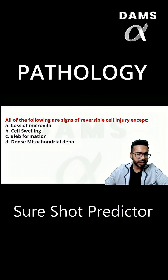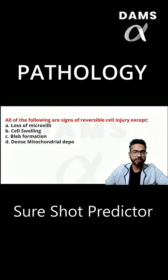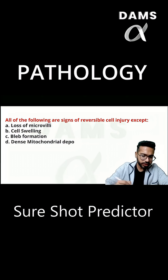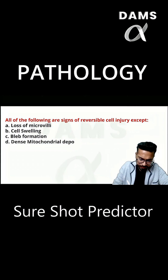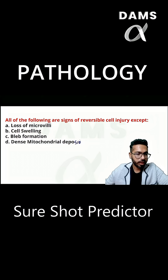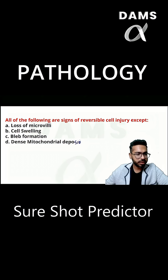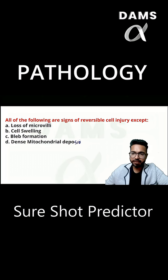Quick review — we will try to cover 25 questions in one hour. All of the following are signs of reversible cell injury, except — pretty easy question, no wasting time on this. I hope everybody who is online will comment and will engage. Let's make the session engaging. Hi everybody.